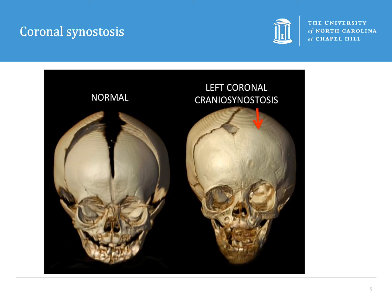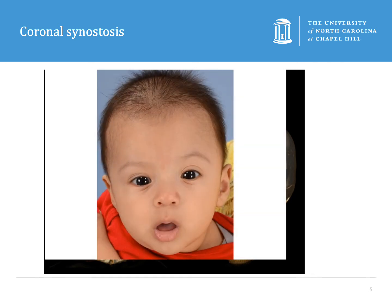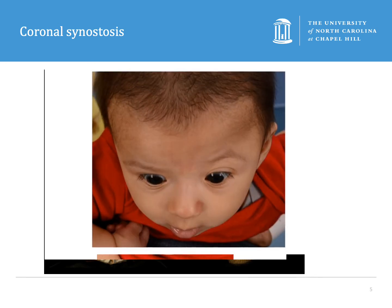Coronal synostosis is the premature fusion of one or both coronal sutures, resulting in the inability for the head to grow in the AP direction. This results in forehead flattening on the affected side — in this case the patient's left — as well as a raised eyebrow on the same side. This is oftentimes called a harlequin eye, which is a result of the abnormal orbit shape. The synostosis can also be associated with a subtle contralateral nasal deviation. Here's a picture from above noting that forehead flattening on the patient's left.